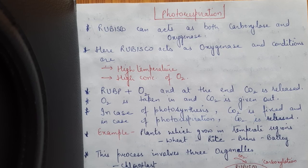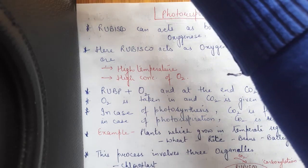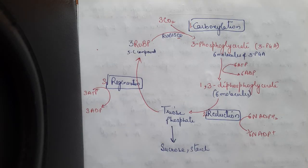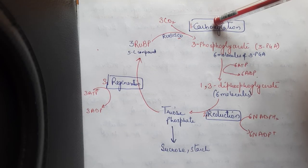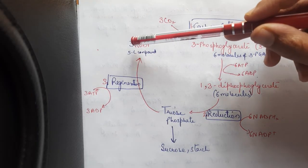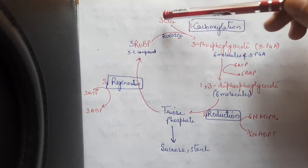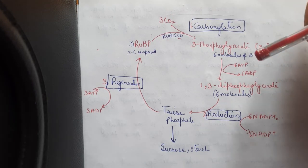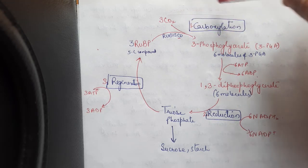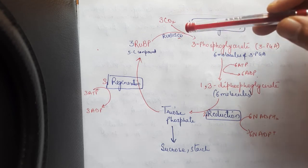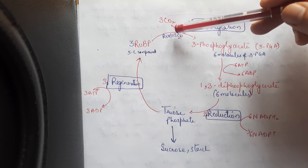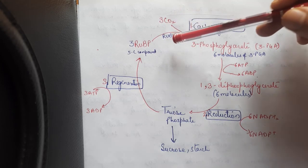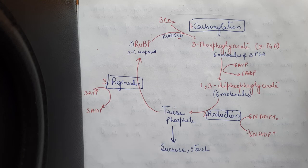In the Calvin cycle, we saw that the first step involves the enzyme Rubisco, and that first step is carboxylation — RuBP, a 5-carbon compound, accepts carbon dioxide. That step is called carboxylation, and the enzyme used is Rubisco — ribulose carboxylase oxygenase. It can act as both carboxylase and oxygenase.